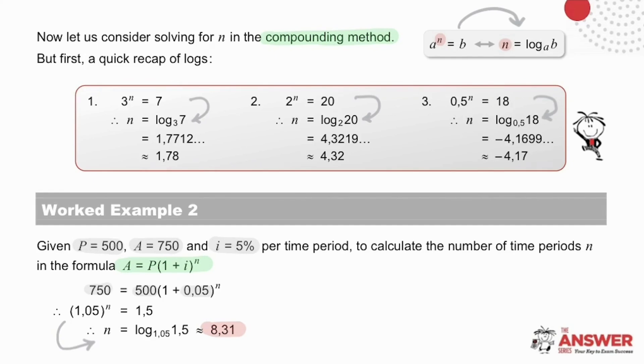This is smaller than our answer of 10 when we calculated n previously using simple increase. And this tells you that it will get to 750 sooner using compound increase, taking 8.31 time periods, as opposed to 10.